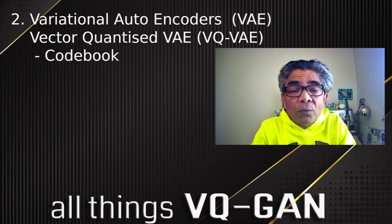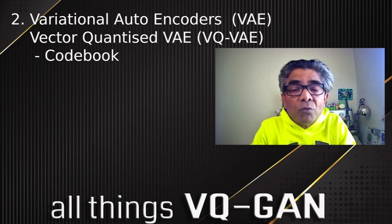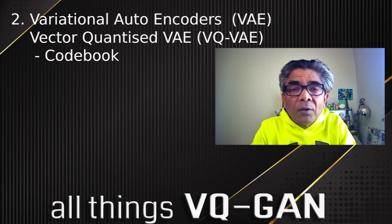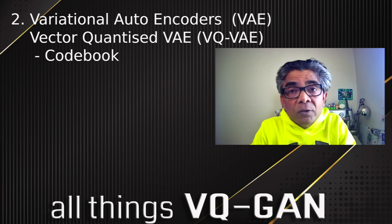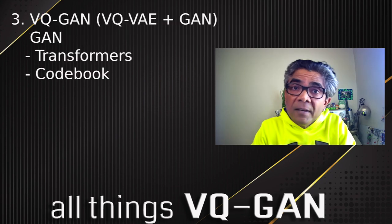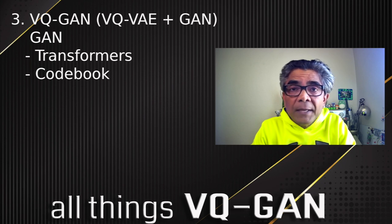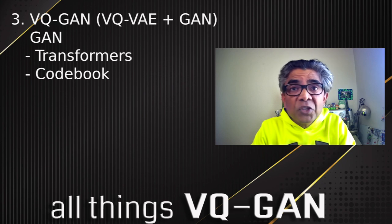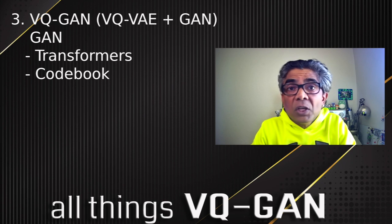In the second part we are going to learn how the codebook is created in the vector quantized variational autoencoder and how it is used subsequently to extract features from the source data and then use these features to generate new images. The third and last part of this series is going to focus on VQVAE and the GAN together, with special emphasis on the transformer and its connection to the codebook.